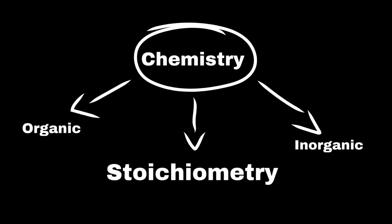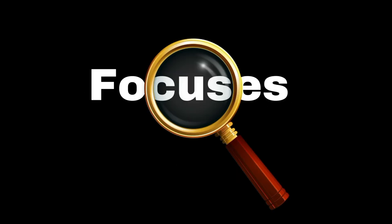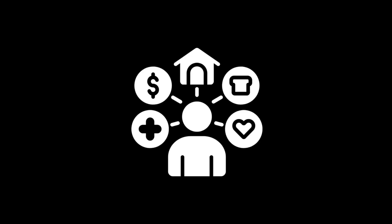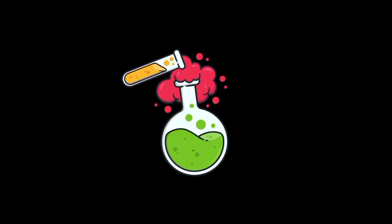Stoichiometry is a branch of chemistry that focuses on the relationships between the amounts of reactants and products in a chemical reaction. In simple terms, it helps us understand how much of each substance is needed and produced when a reaction occurs.